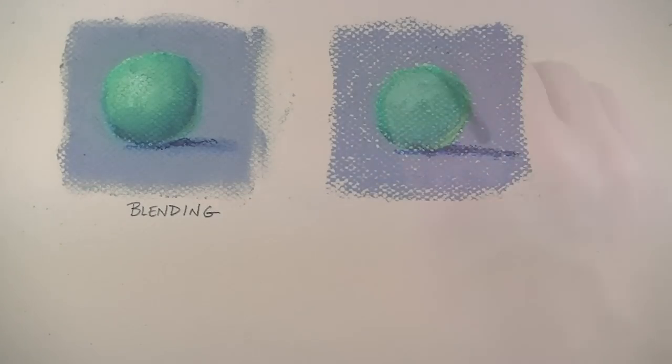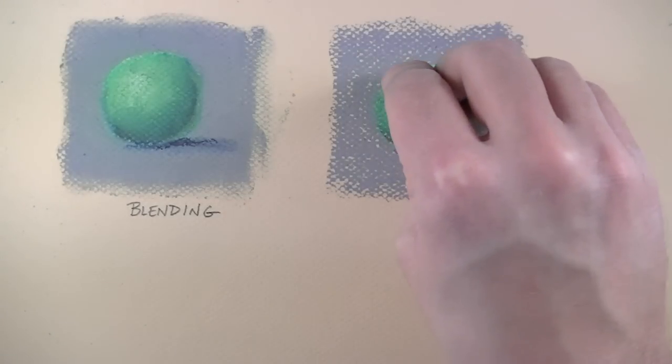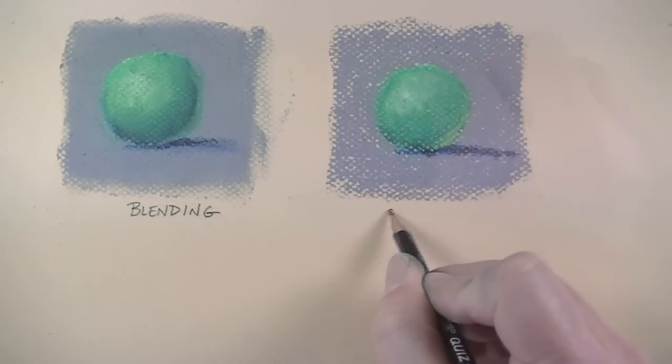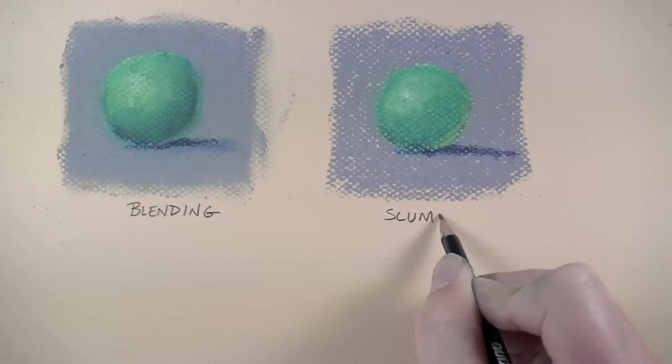You may also go back and add a bit of reflected highlight and make the highlight on the sphere a bit more intense with white. Again this technique is called scumbling.